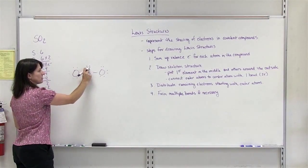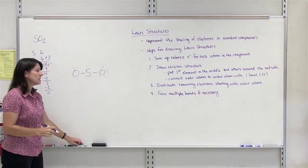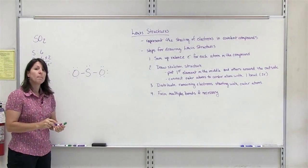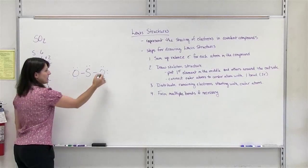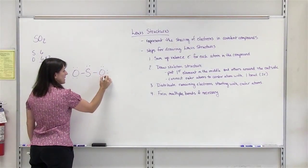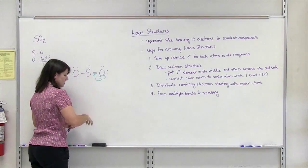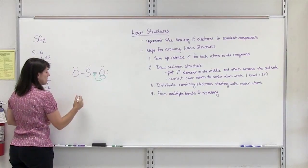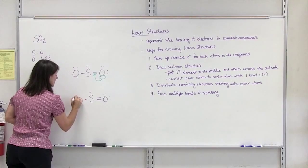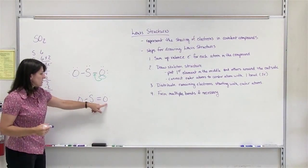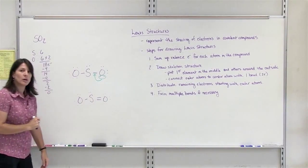Sulfur only has 2, 4, 6 — it does not have all 8 electrons, so we are not done. Sulfur has to have all 8. What happens is that one of the outer atoms has to share more electrons. One of the oxygens has lone pairs that aren't being shared, so we take one of those pairs and move it in between the S and the O so it is being shared — forming a double bond. Now the sulfur gets 2, 4, 6, 8 electrons and everyone is satisfied. The final structure has a double bond between sulfur and one oxygen.